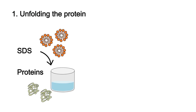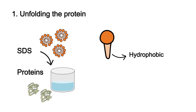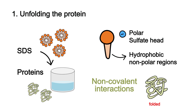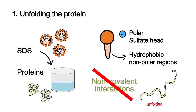Let's talk about the first action: unfolding the protein. When added to a solution of proteins, the hydrophobic tail of SDS will interact with the hydrophobic, nonpolar regions of the protein, while the polar and negatively charged sulfate group will interact with surrounding water molecules. This causes the protein to unravel and denature, as it disrupts the non-covalent interactions that held the protein in its folded position.